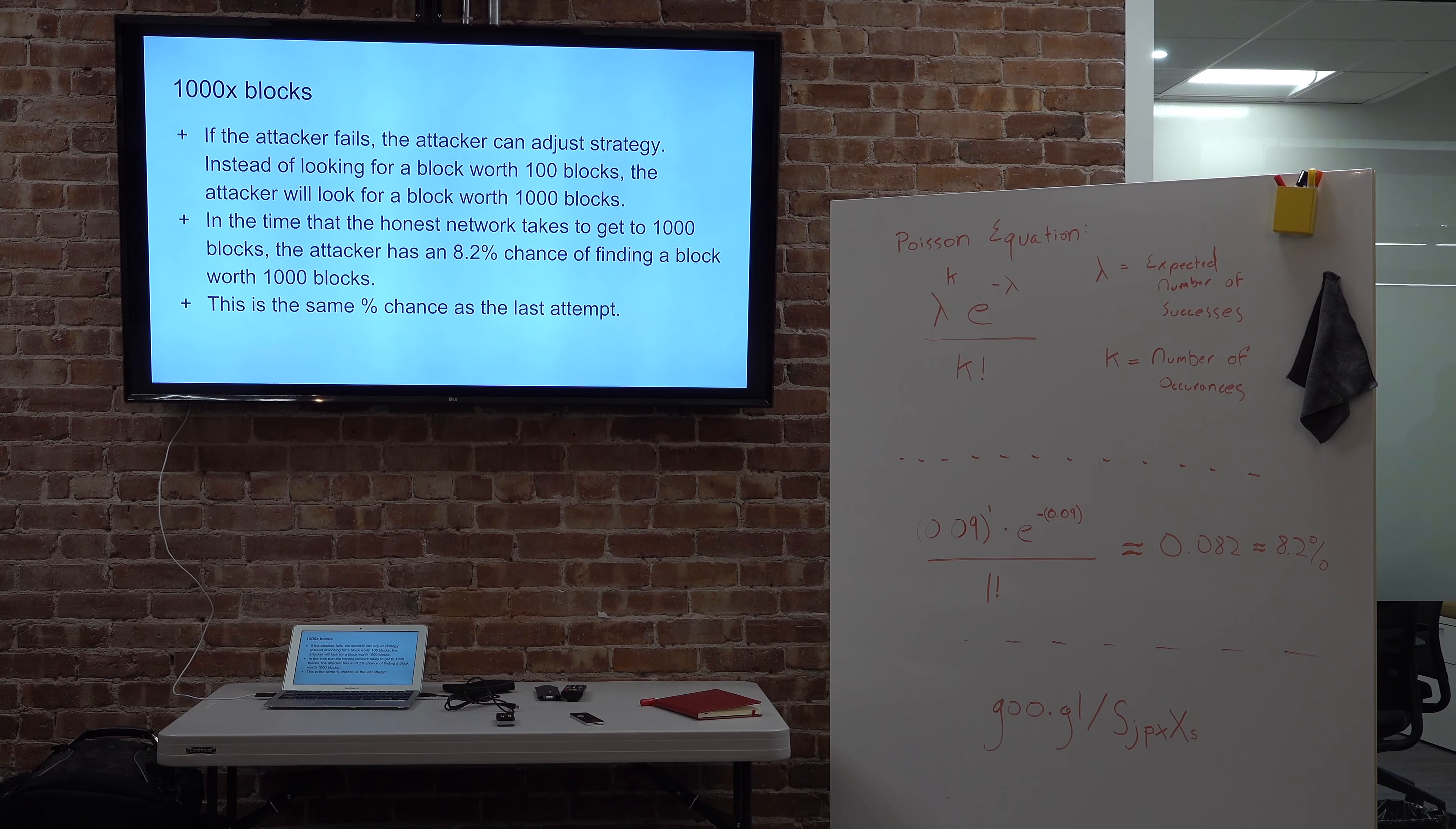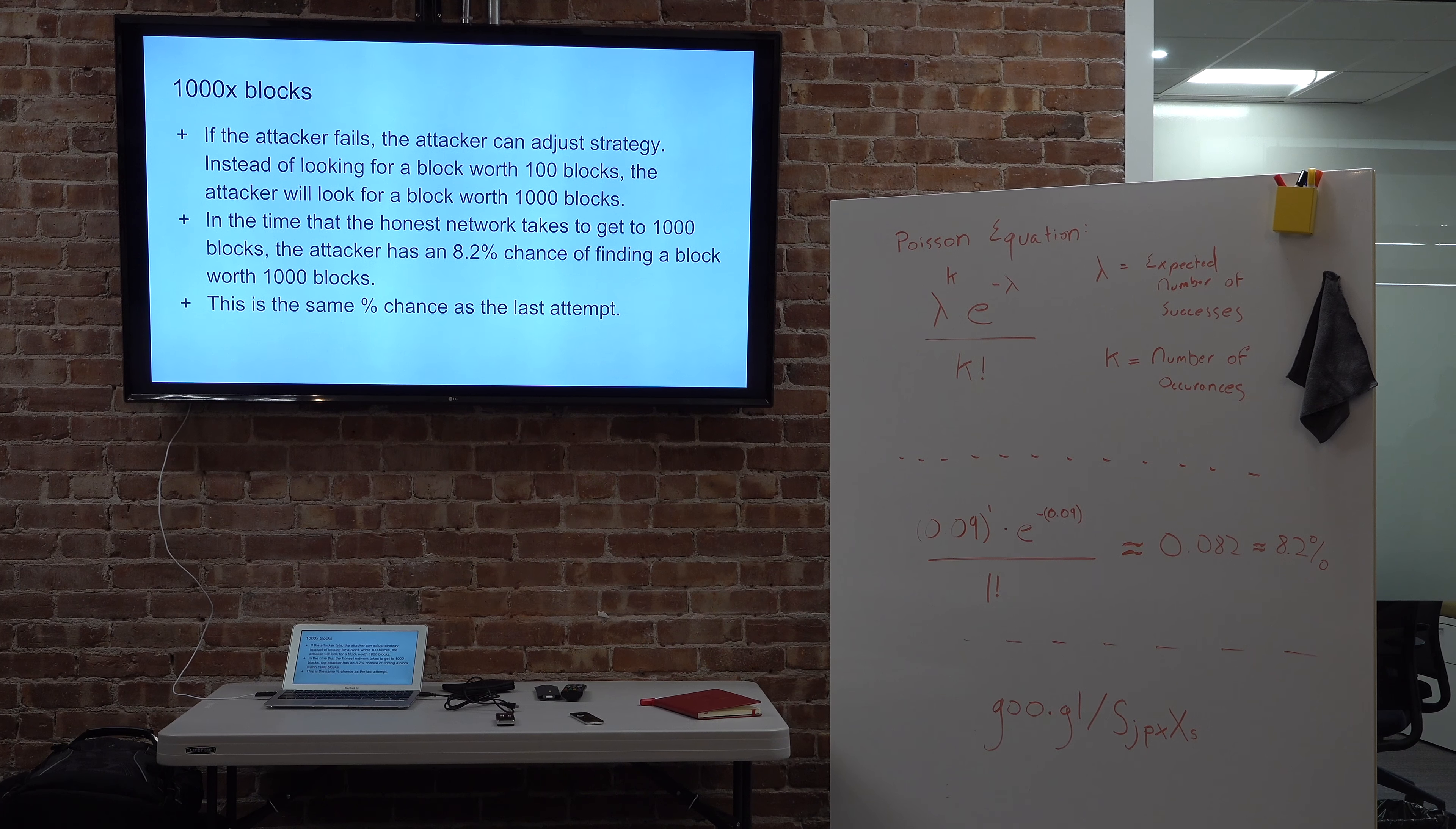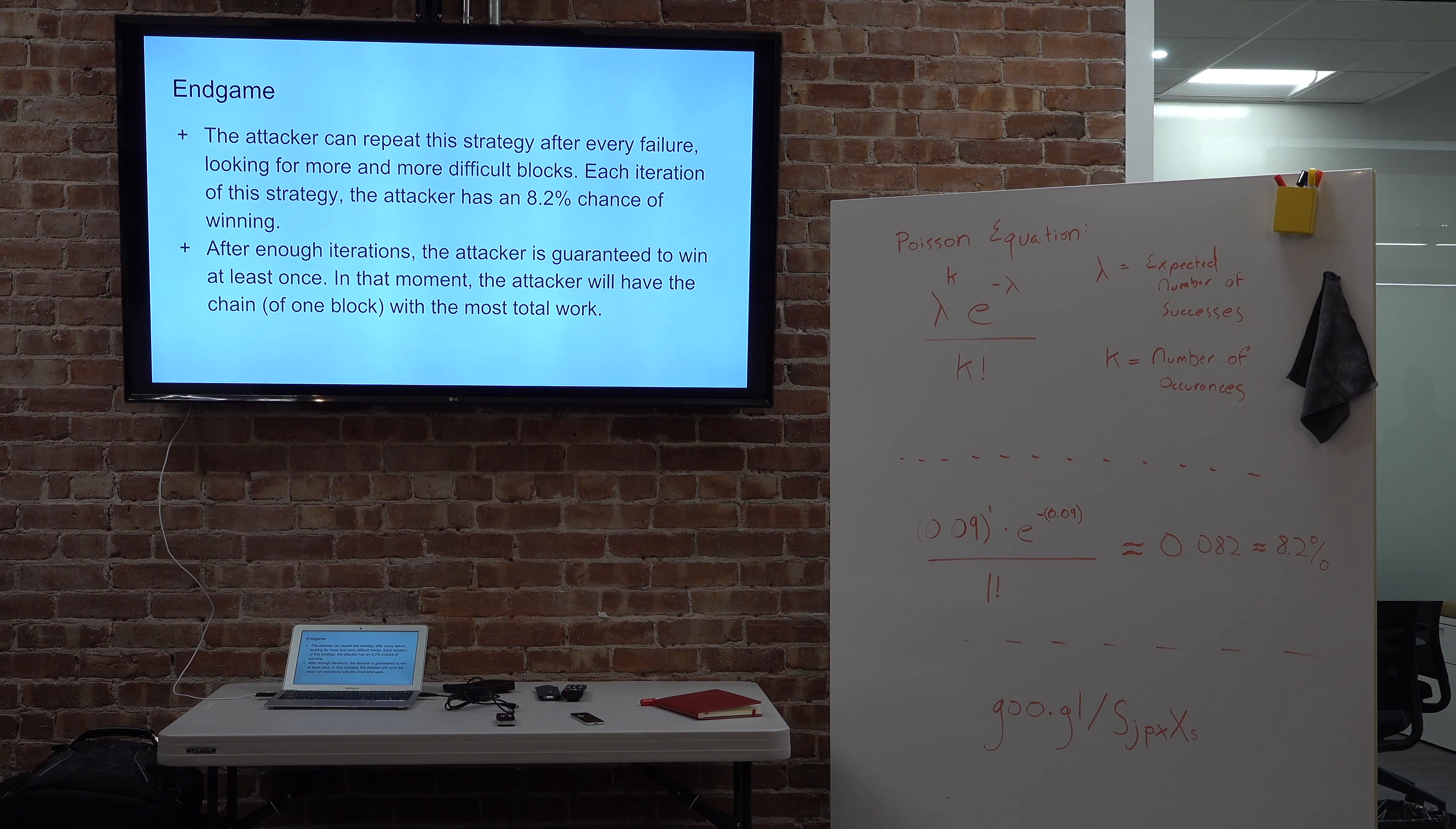So we've hit an equilibrium where basically every time the attacker fails, the attacker just runs this same process and tries again. And they have the same chance. And so basically the attacker's rolling a multi-sided die, has an 8.2% chance of winning, and they can roll it as many times as they want. Eventually, the attacker's going to win. The attacker's going to have the longest chain and the honest chain's going to be wiped out. So it's a pretty simple strategy, but we've presented the way that our attacker can win. Yeah, so there we go. The attacker has a guaranteed chance to win.